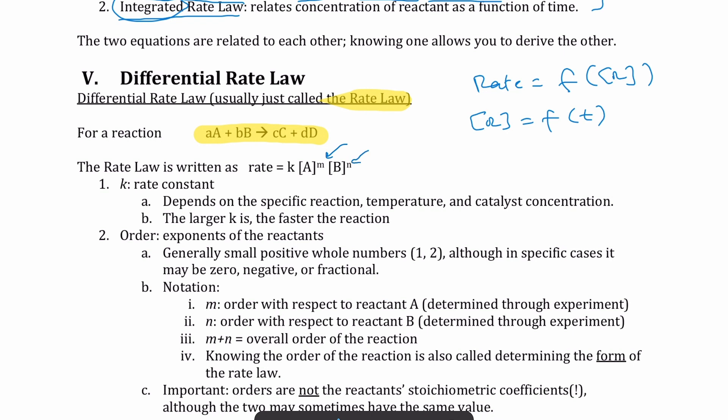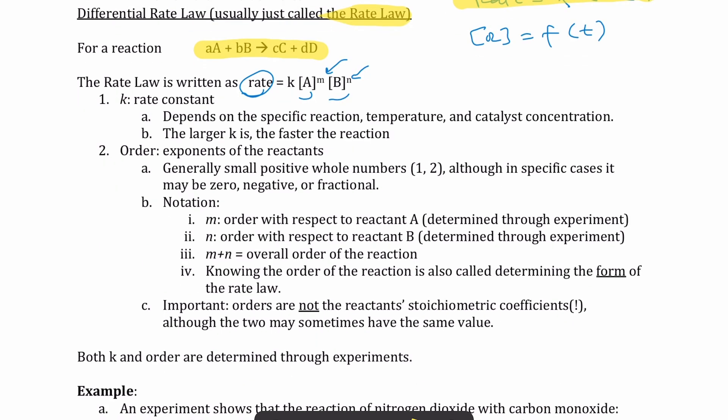Before we go further, this is an equation where rate is a function of concentration. That's what a differential rate law represents. It tells you how the rate of the reaction is affected by the concentration of the reactant that is present. So what is this K, M, and N?